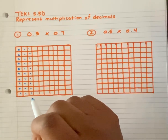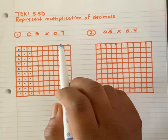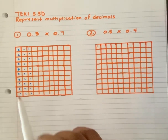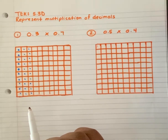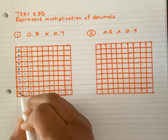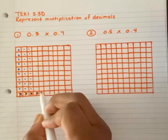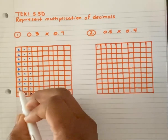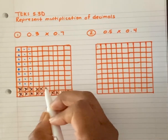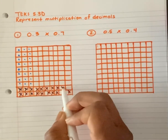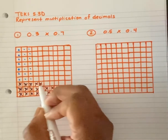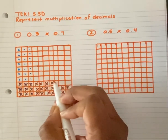Now I'm going to represent my 7 tenths, but this time I'm going to represent that horizontally — that means I'm going to go this way. And instead of doing dots, I'm going to do X's. If you have a pencil you can shade it in, or if you have two different colors you can color them in as well. I just want to do X's to show the differences between the two different shadings.